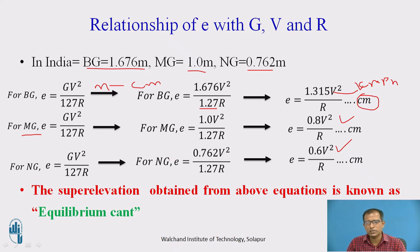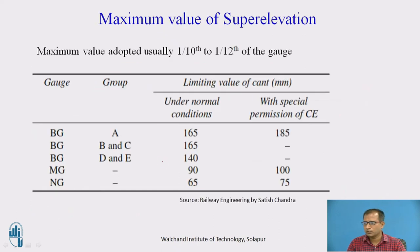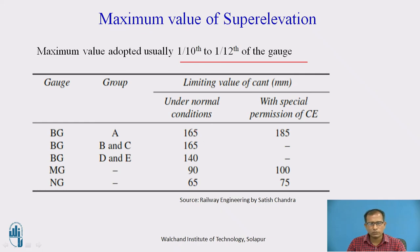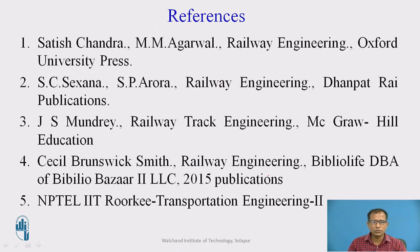The speed considered here is called the equilibrium speed and the superelevation calculated is equilibrium cant. To restrict maximum values, a thumb rule of 1/10th to 1/12th of the gauge is taken as maximum superelevation. For broad gauge — Group A and B — the limiting superelevation under normal conditions is 165 mm, and with permission from the Chief Engineer it is 185 mm. For meter gauge it is 90 mm, and with Chief Engineer permission it is 100 mm. These are the references used for preparing this presentation. Thank you.